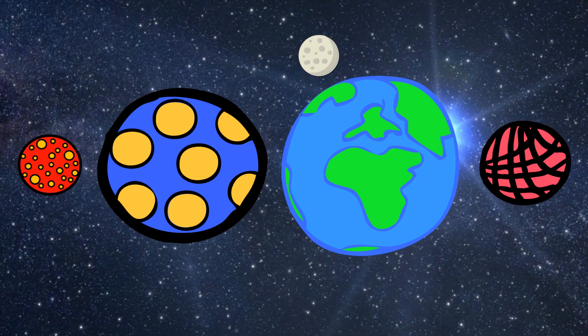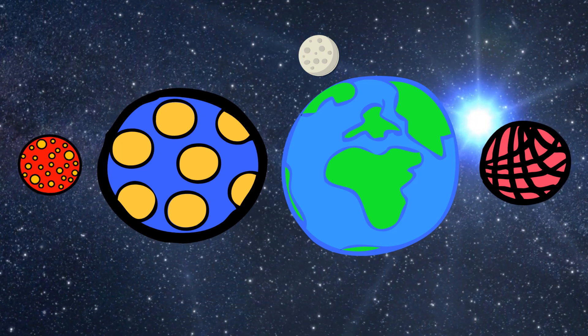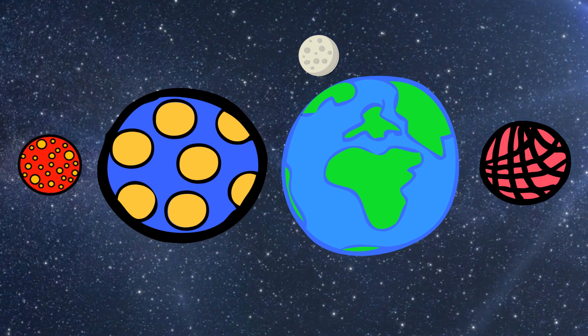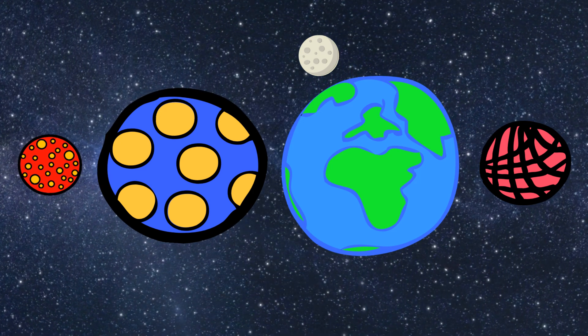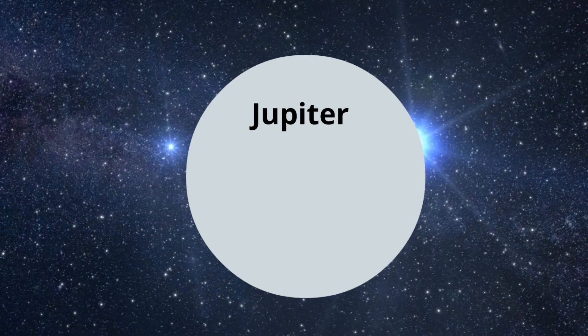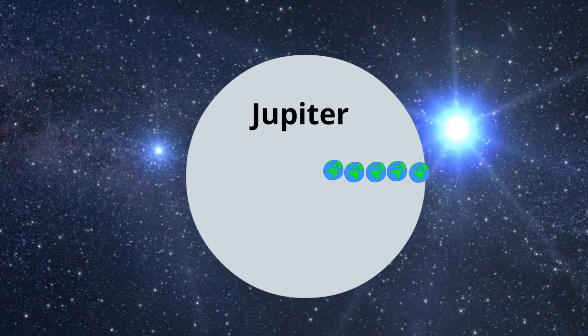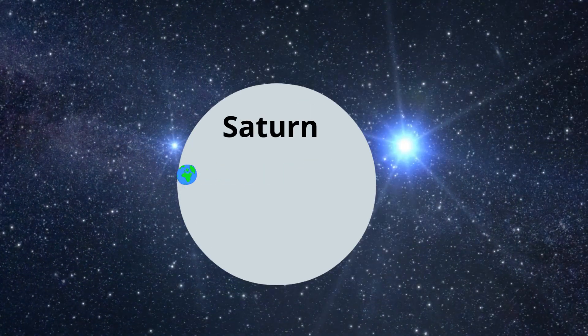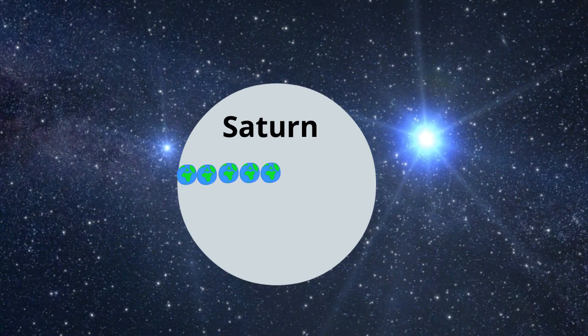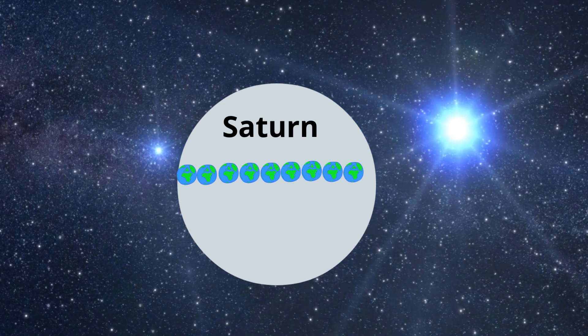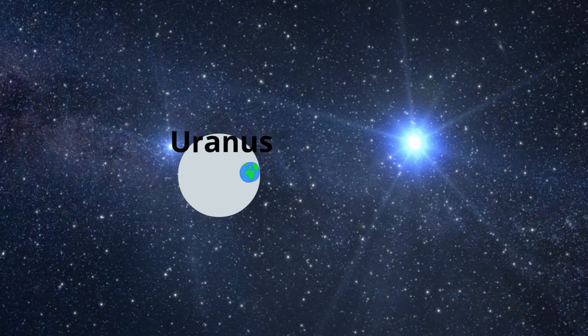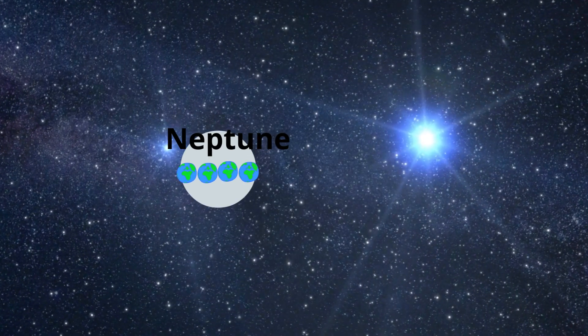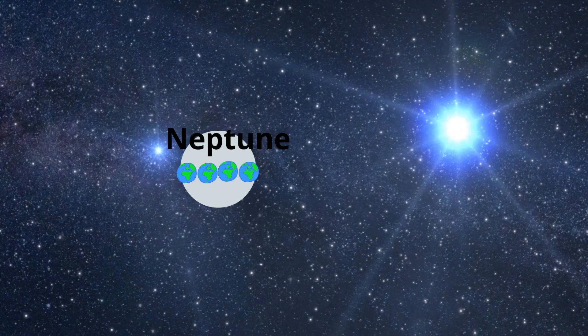I also thought it would be interesting, since the other planets are so much larger than the Earth, to get a little comparison of how many Earths would fit across the diameter. And if you have Jupiter, 11.21 Earths would fit across the diameter of Jupiter. With Saturn, 9.45 Earths would fit across. Uranus, 4.01 Earths would fit across. And with Neptune, 3.88 Earths would fit across the diameter of Neptune.